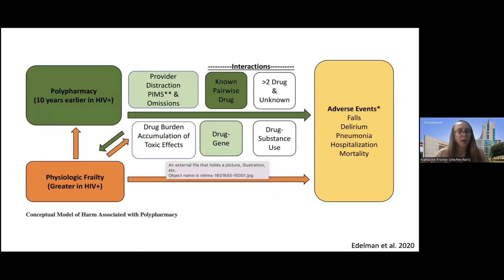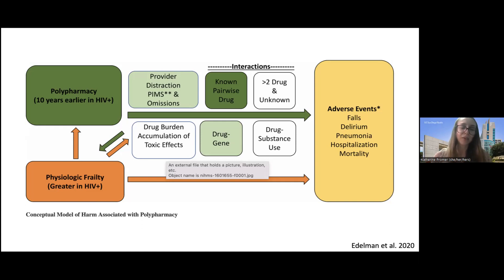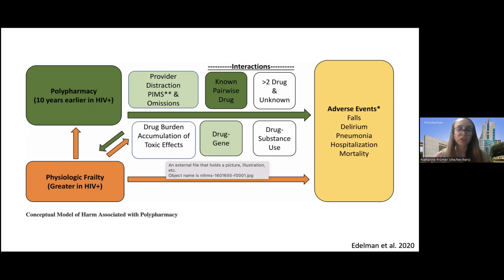The interaction between polypharmacy and frailty is quite complicated and additive. Physical frailty contributes to polypharmacy, but polypharmacy also leads to physical frailty. Complications include: it's harder for providers to manage a large med list and notice potentially inappropriate medications or check for interactions; and it's harder for the patient with a high drug burden — the logistical burden of picking up, managing, and paying for all medications, accumulation of toxic effects, drug-drug interactions, and interactions with substance use — leading to complications such as falls, delirium, potentially pneumonia, hospitalization, and mortality.